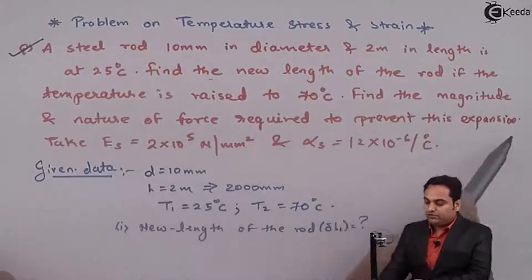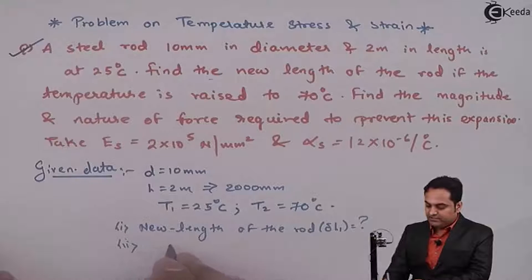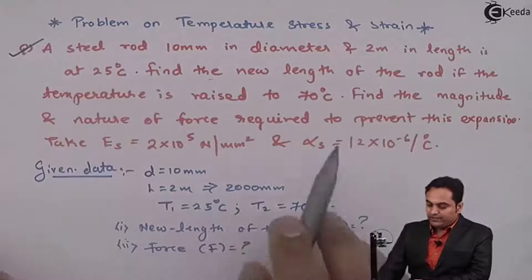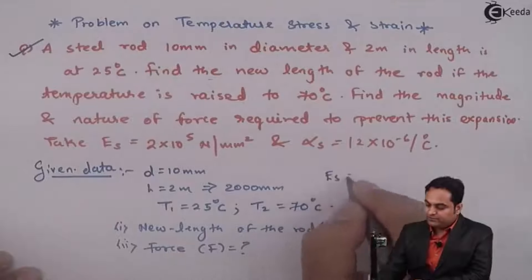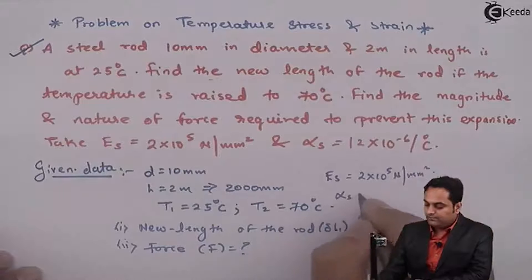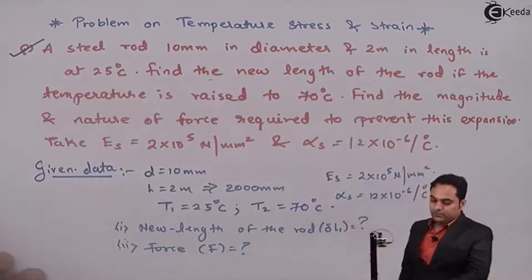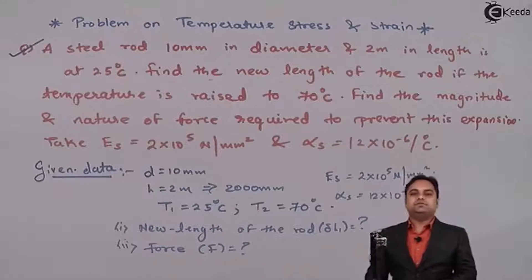We also need to find the magnitude and nature of force required to prevent this expansion — that is the reaction force F. The given values are: Young's modulus E = 2 × 10⁵ N/mm² and the coefficient of thermal expansion α. With the data available, let us try to get the solution.